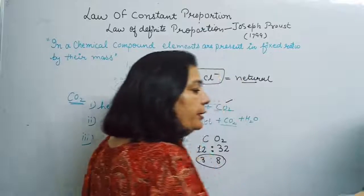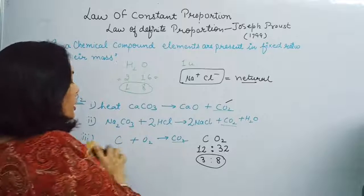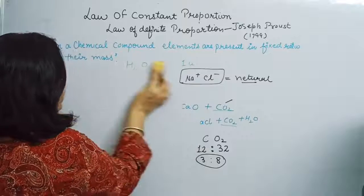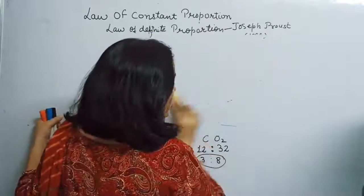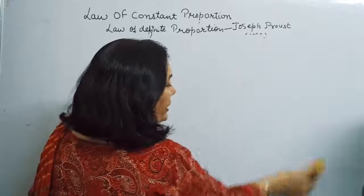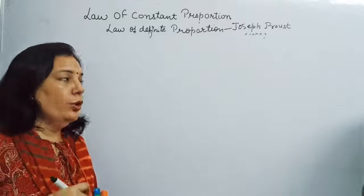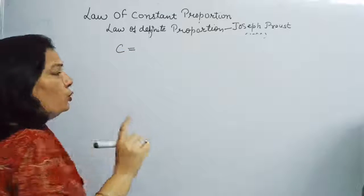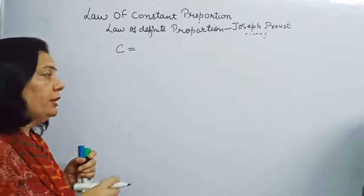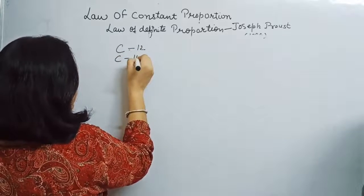This law was not applicable to each and every type of compound. The first limitation is that if any element is present in isotopic form — for example, carbon is present in two isotopic forms in nature: C-12 and C-14.